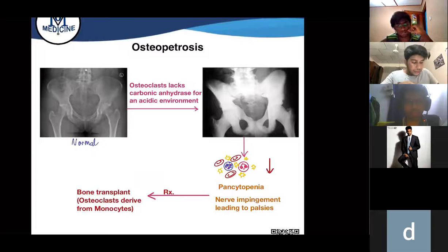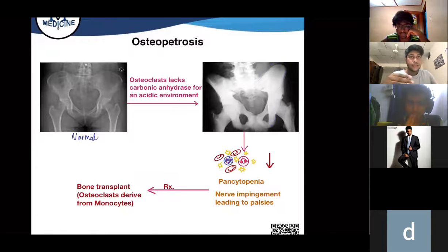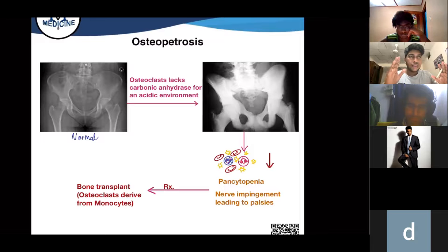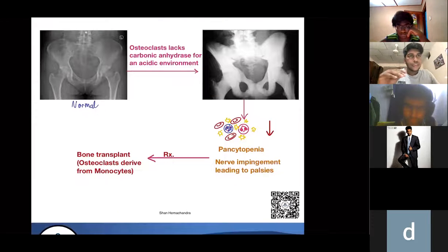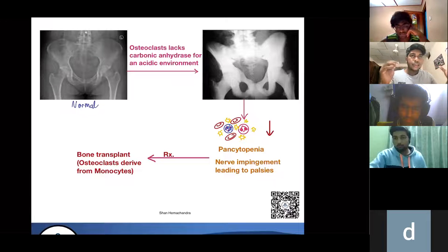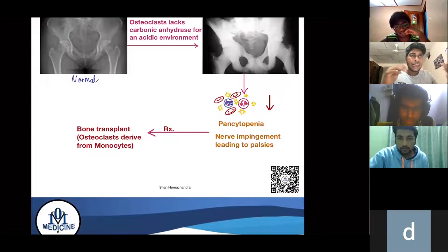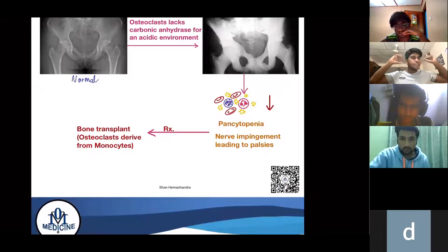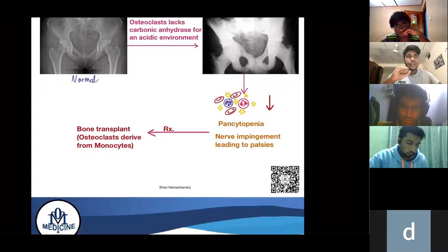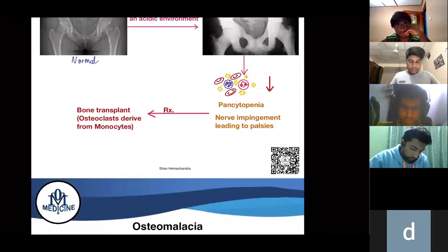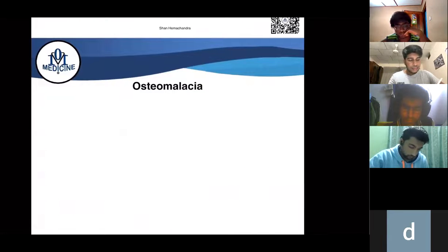Osteopetrosis is when osteoclasts can't break down the bone because they can't produce the acidic environment needed. This leads to a very hard, dense bone — on X-ray it appears very bright due to calcium. When the bone marrow area is infiltrated by bone, there is reduced blood cell production, leading to pancytopenia. As bones become bigger, nerve impingement occurs causing nerve palsies. Since osteoclasts are derived from monocytes, a bone marrow transplant is usually curative.